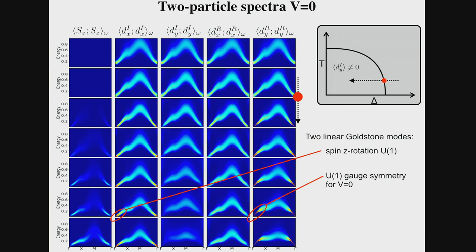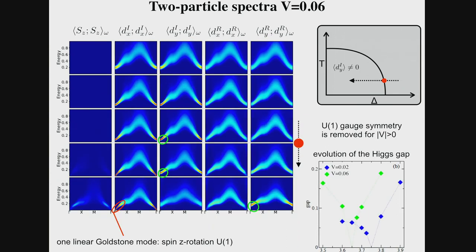Now let us remove one of the symmetries. Let us switch on this cross-hopping and remove the gauge symmetry. Going in the same direction, we see the Goldstone mode associated with spin rotation is still there, but the other mode associated with phase rotation is now gapped. If you extract the value of this gap for different values of the hopping parameter, in the normal phase the gap closes and doesn't depend on V, but in the ordered phase, this is how the gap opens. We get something that could be called a Higgs gap. It is a gap that is closed exactly at the phase transition and then opens again when we go into the ordered phase.